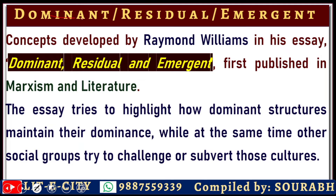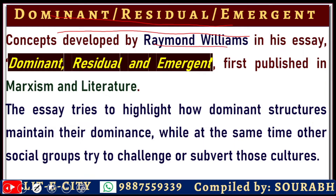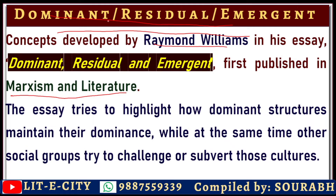Our first term is Dominant, Residual, and Emergent. Basically these are three concepts developed by Raymond Williams in his essay 'Dominant, Residual and Emergent,' which is also the name of the essay. It was first published in his very popular book Marxism and Literature. According to Williams, these are three different modes or three different states of a cultural society, or we can say cultural values.